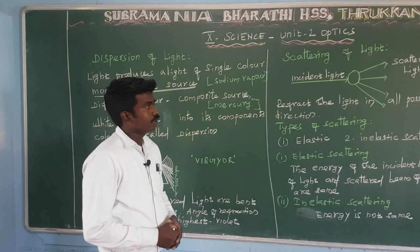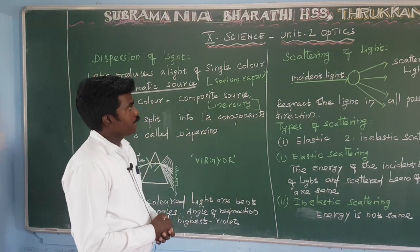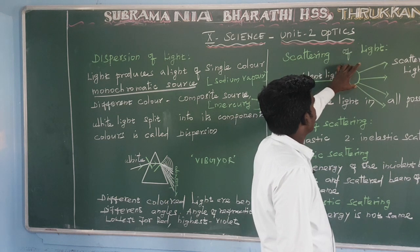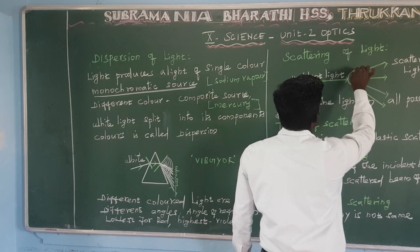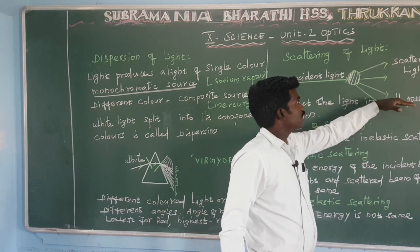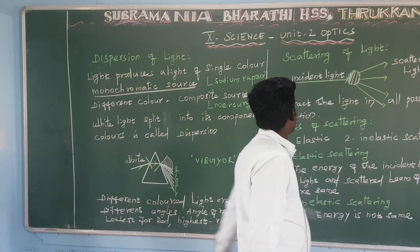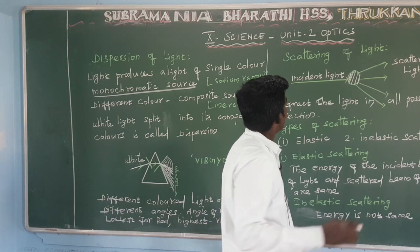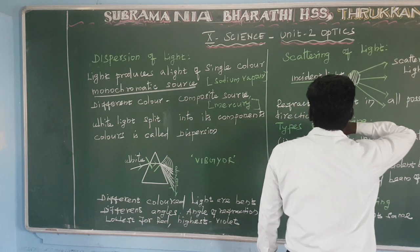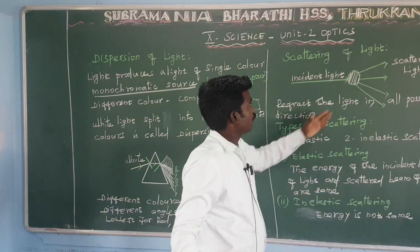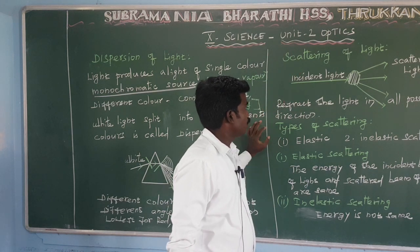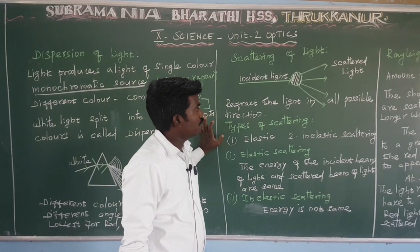The next topic is scattering of light. When incident white light hits an object called a scatterer, different colors are refracted in all possible directions. This spreading of light in different directions is called scattering. There are two types of scattering: elastic scattering and inelastic scattering.